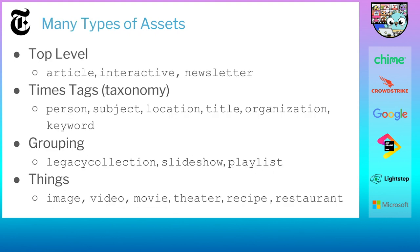We have lots of other types of assets. At the top level, we've got things like articles, interactives — like a lot of the things we've done for elections, COVID, and newsletters. We have a whole taxonomy, which we use to tag our articles with who it's about, the organization, location, and things like that — we call those Times Tags. We'll group things together — that's how a lot of the sections in our site work, called legacy collections. We also have slideshows for images, playlists for things like podcasts, and concrete items like videos, movies, and theaters.